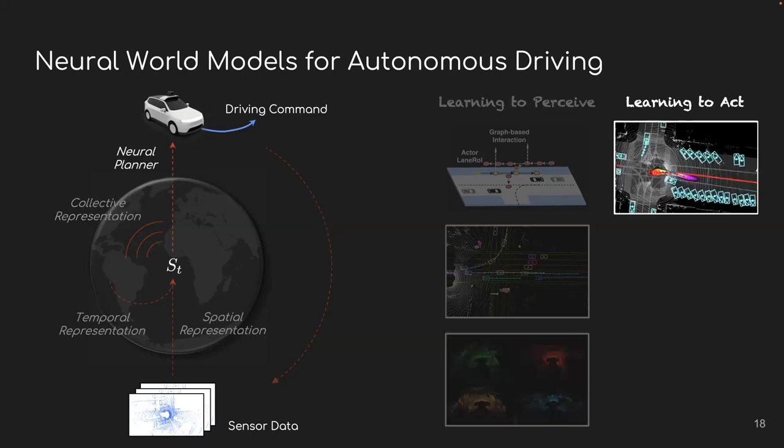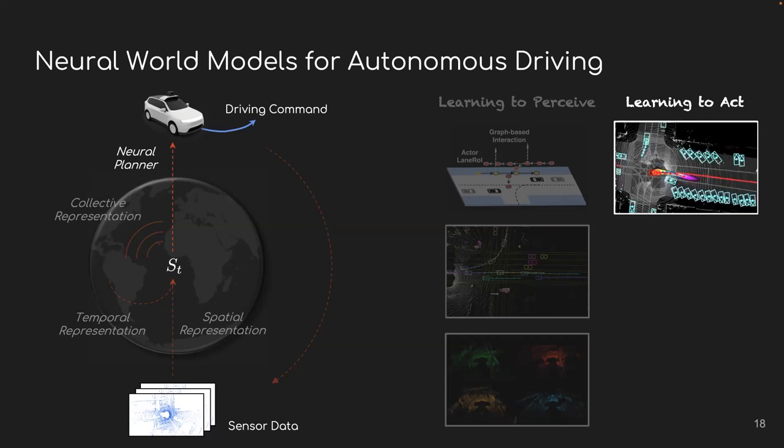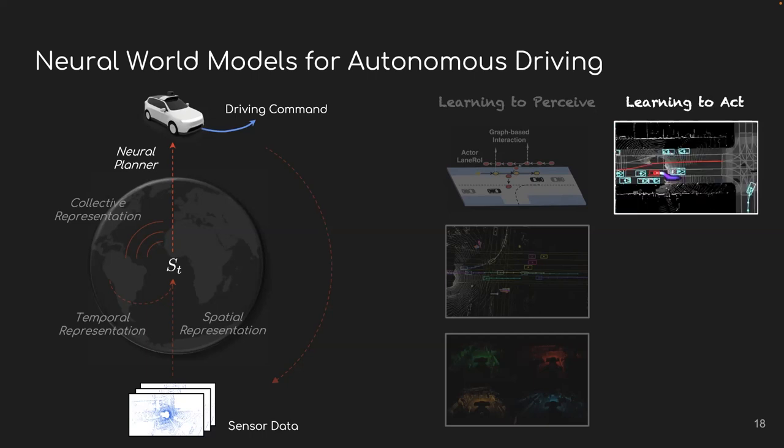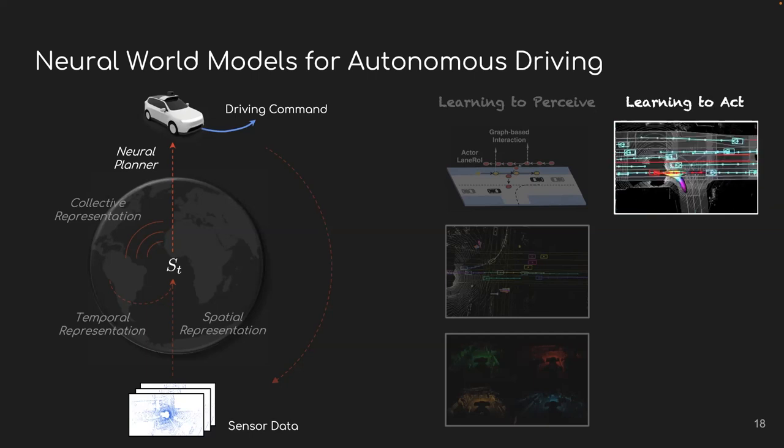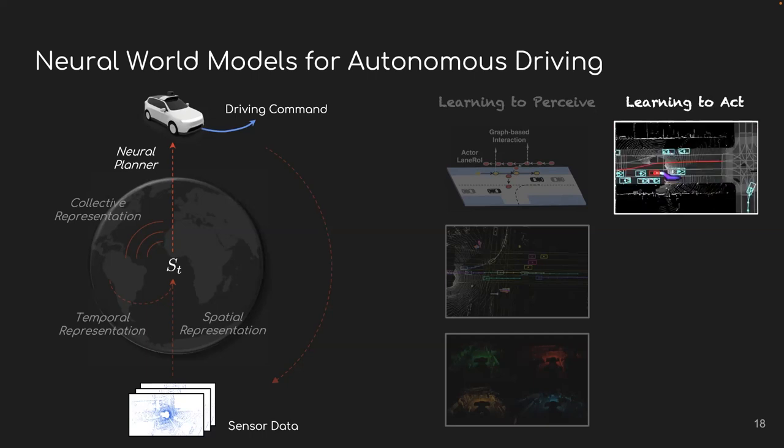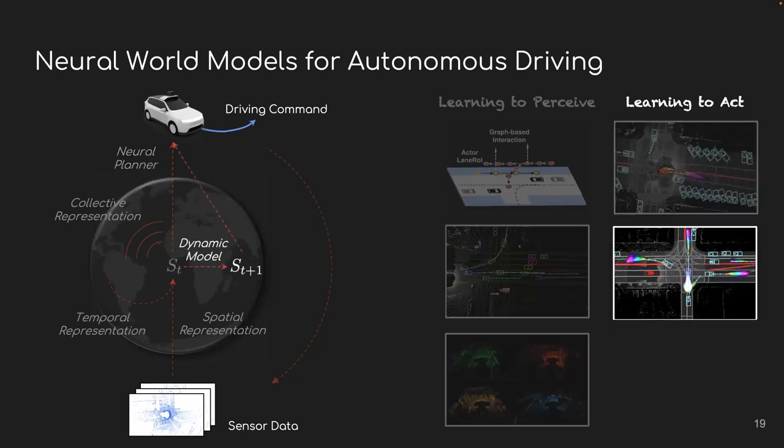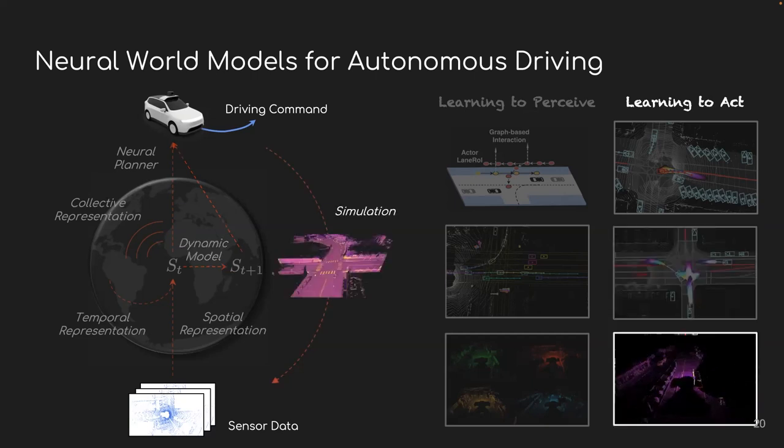But of course, only perceiving the world is not enough for autonomous driving. So in today's talk, I will describe some of our efforts on learning to act. I will showcase how we integrate learning with knowledge and make intelligent driving systems. So this includes, first of all, how we bridge observation with action through a neural planner and how we build a multi-future dynamic model of the world to further enhance our driving, basically to improve the reliability and robustness. And lastly, how we close the loop back from action to sensor and test our holistic driving system through a better simulation environment.